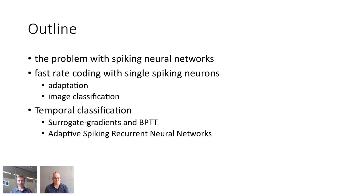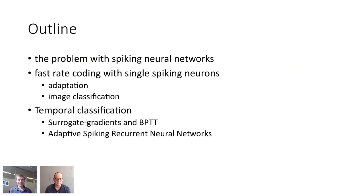A brief outline of the talk — the whole talk is scheduled for 45 minutes, I planned about 35 minutes with some time for questions. I'm going to talk about spiking neural networks and address the main problem that people outside the field are seeing. I'll cover what a spiking neuron is, how you can do things like image classification, temporal classification, and surrogate gradients, and show how far we got on real problems with adaptive spiking recurrent neural networks and surrogate gradients / BPTT.